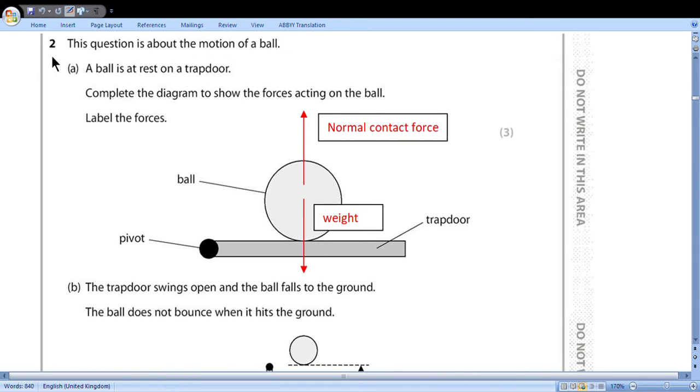Question 2. This question is about the motion of a ball. A ball is at rest on a trapdoor. Complete the diagrams to show the forces acting on the ball. Label the forces. So I have drawn two arrows of the same size, labeled one weight and another normal contact force. As a result I will get three points.